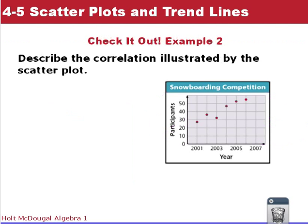Now it's your turn to do a Check It Out — describe the correlation illustrated by the scatter plot. If both data sets increase, it's positive. If one increases while the other decreases, it's a negative correlation. And if there's no relationship, then there's no correlation.